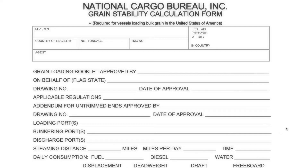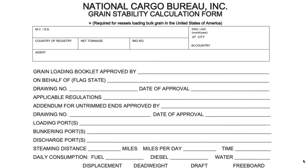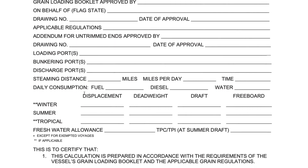Let us have a quick glance at how an NCB form looks like. This is the first page, where a lot of general particulars are asked, which can be filled up using your grain stability booklet and ship particulars. After that, there is voyage-specific data such as loading ports, bunkering port, discharge port, steaming distance, miles per day, time for the whole voyage, daily consumption of fuel, diesel, and water, and the applicable load line. In this particular case, we are going by the summer load line.